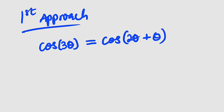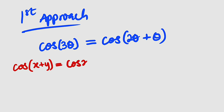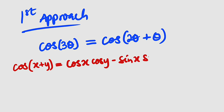So what can you remember about the double angle for cosine? If you have cosine of x plus y, this is the same thing as cosine of x multiplied by cosine of y, minus sine of x multiplied by sine of y.